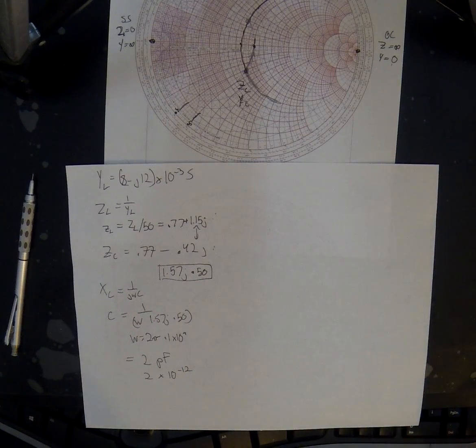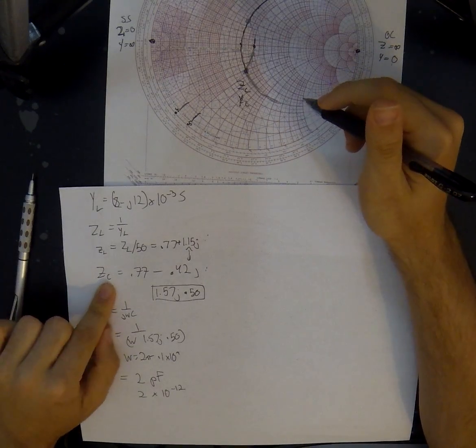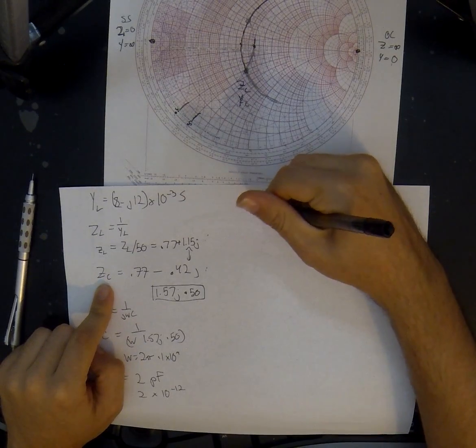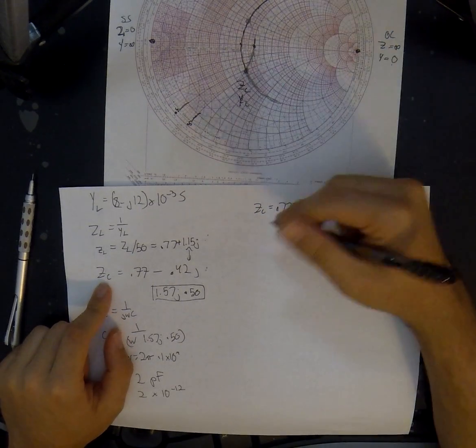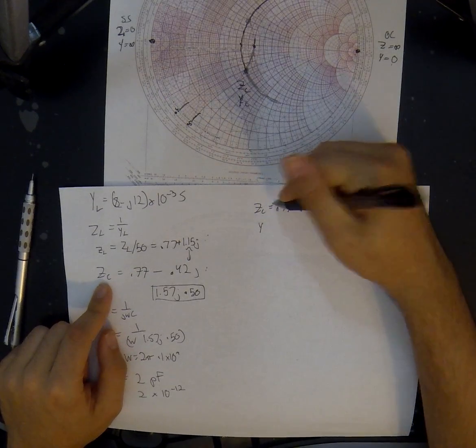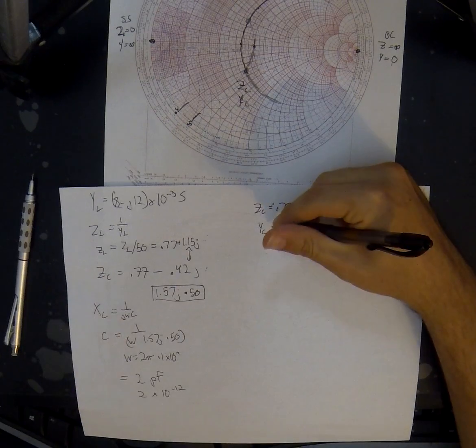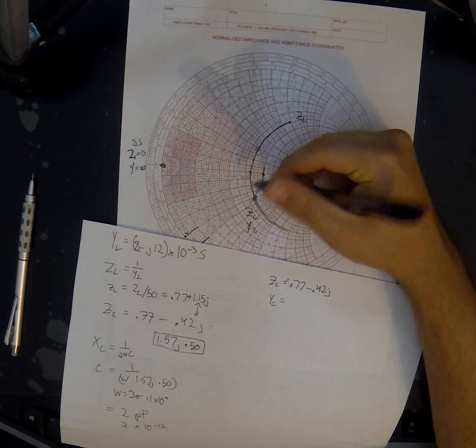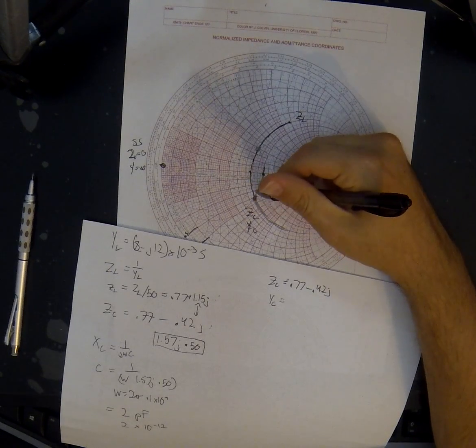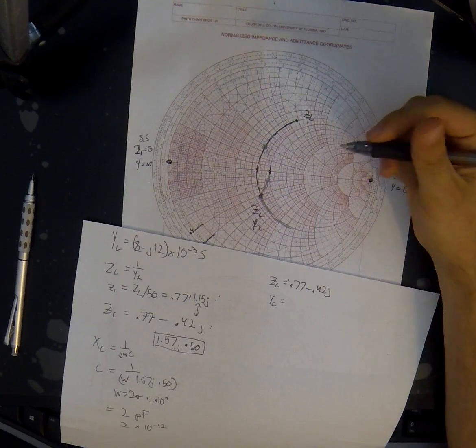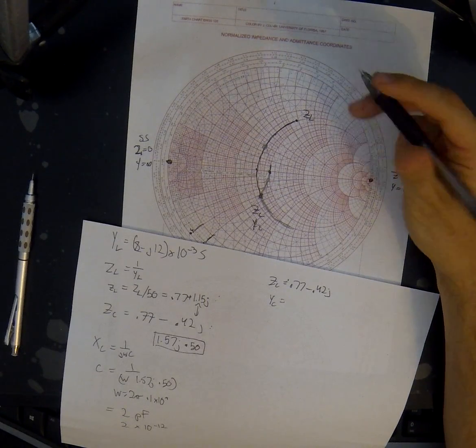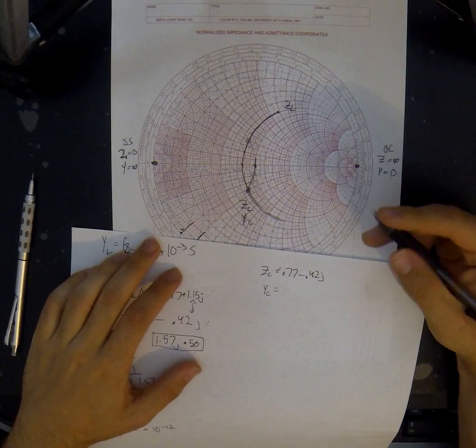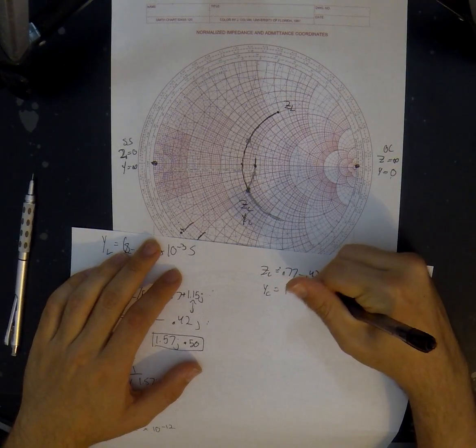So now that we have our series capacitor value, we still have to find our inductor value. We know our Z sub C is 0.77 minus 0.42j. Let's change that to an admittance. This is normalized again, right? Let's just realize that. And this Y sub C should be normalized. Now here's a sanity check. We know that we chose this point specifically so that it's hitting the 1 on the admittance circle. That way we can traverse up to 1 with no imaginary component. So if you take the inverse of this, you should get 1 plus or minus something. And we do. So we get 1 plus 0.546j.